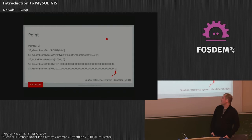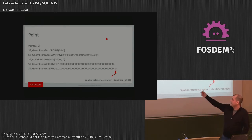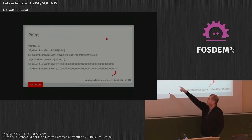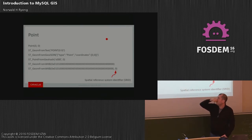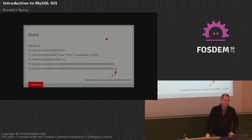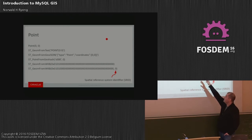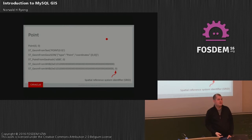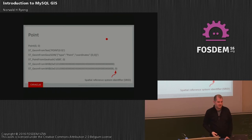A point is, in our space, a two-dimensional thing. There are several ways you can create that point: you have one function with the same name as the data type that takes coordinates, you have the Well-Known Text format from OGC, GeoJSON, GeoHash — where the longer the string, the more accurate the point — and Well-Known Binary format. Most of these take a parameter where you can specify which coordinate system this is. If you don't specify it, it defaults to zero.